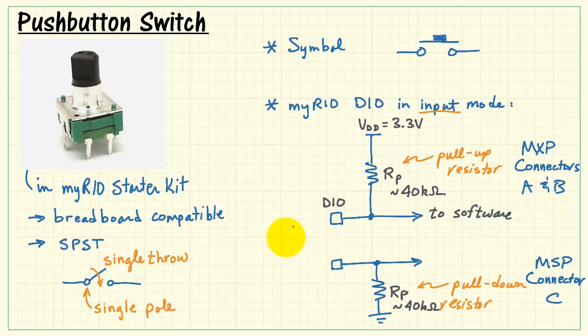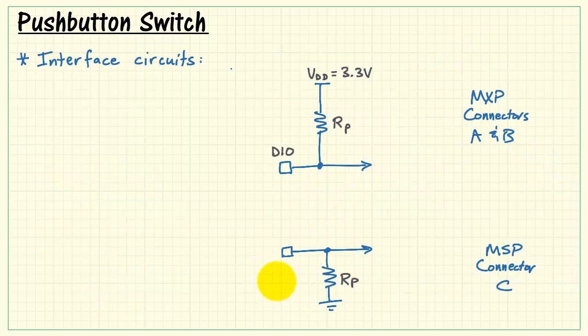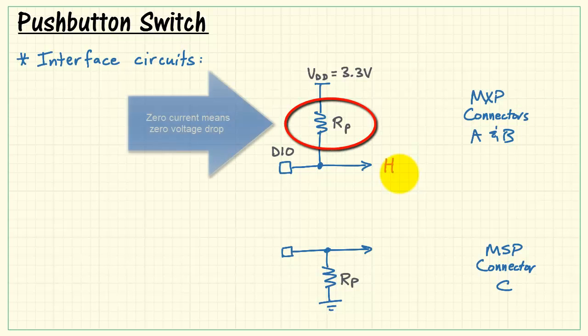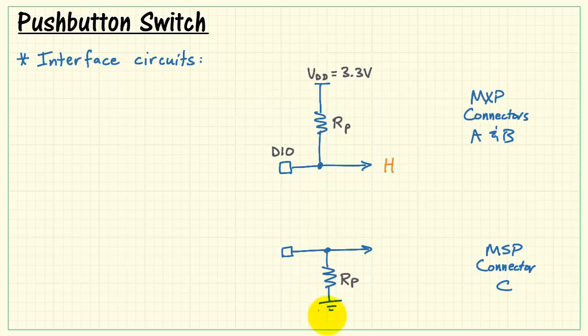Now let's see how we can connect this switch to cause the DIO to switch states. With this pull-up resistor and nothing else connected, it's going to pull the line high. To see why the pull-up works, if there's zero current through that resistor, there's zero voltage drop, and that tugs the line up to 3.3 volts. Similarly, the pull-down resistance pulls it down to low voltage.